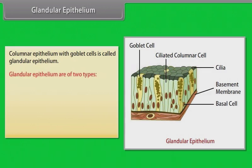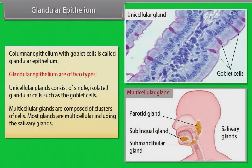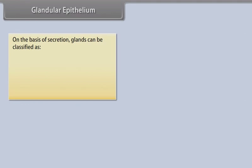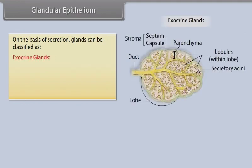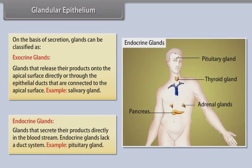Glandular epithelium are of two types. Unicellular glands consist of single, isolated glandular cells such as goblet cells. Multicellular glands are composed of clusters of cells; most glands are multicellular, including the salivary glands. On the basis of secretion, glands can be classified as exocrine glands — glands that release their products onto the apical surface directly or through epithelial ducts, for example salivary glands — and endocrine glands, which secrete their products directly into the bloodstream and lack a duct system, for example the pituitary gland.